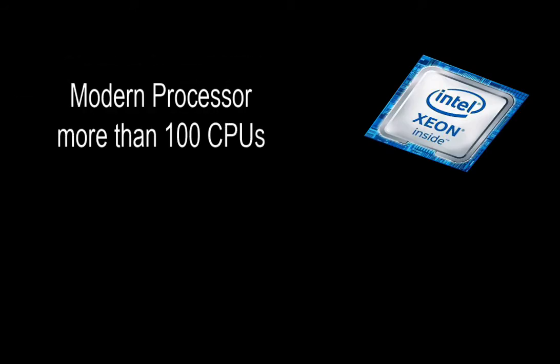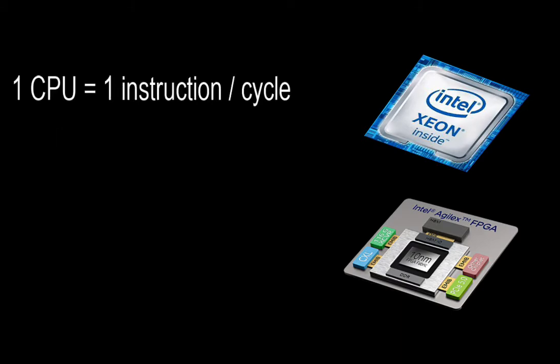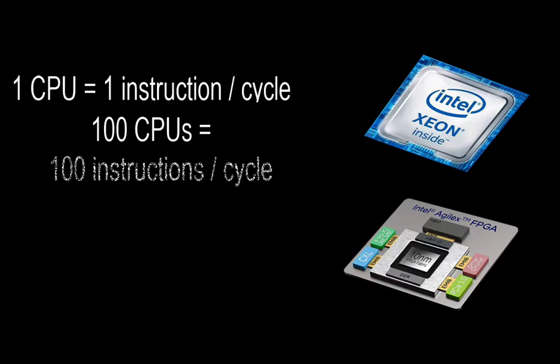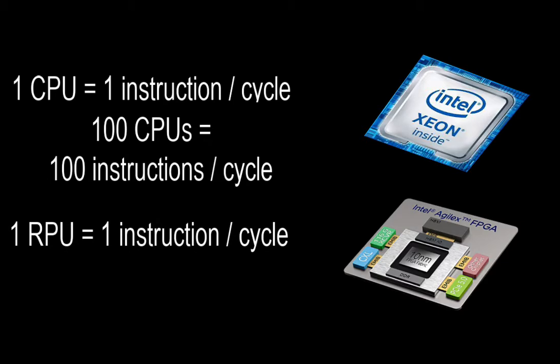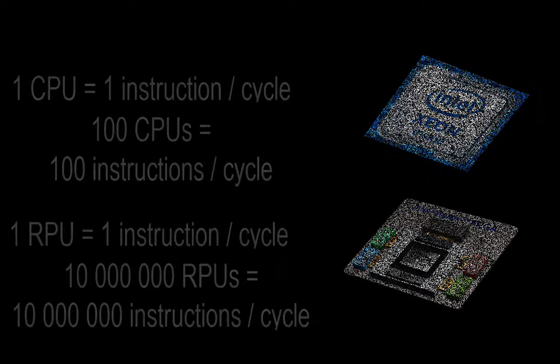A modern processor chip has more than 100 CPUs. A modern FPGA chip has more than 10 million RPUs. A CPU executes sequentially — one instruction per cycle, or 100 instructions per cycle for 100 CPUs. Each RPU executes one instruction per cycle. Therefore, all RPUs will execute 10 million instructions per cycle. Imagine the processing power!